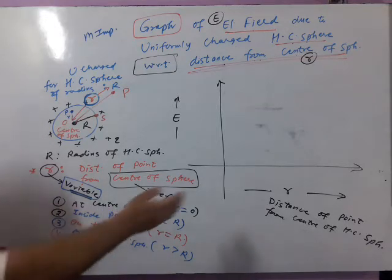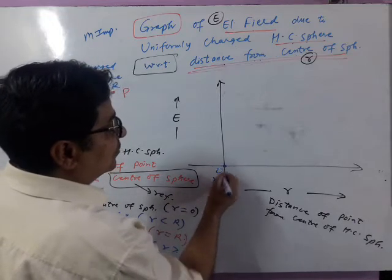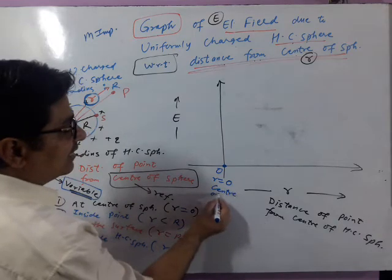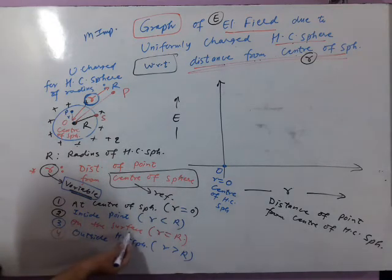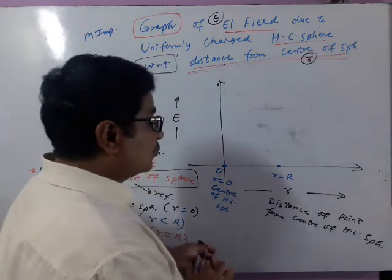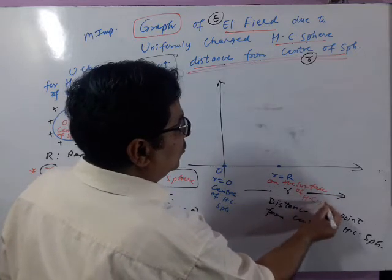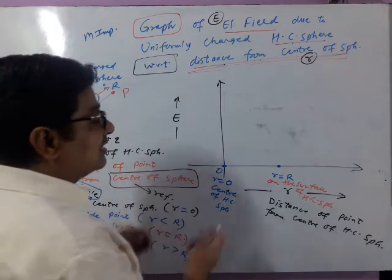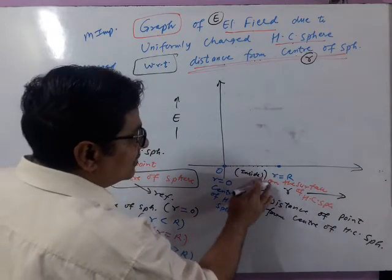Now apply these four points to the graph. At the origin, small r is 0 — this corresponds to the center of the hollow conducting sphere. The region where small r is less than capital R is the inside of the sphere. The point where small r equals capital R is the surface, and beyond that is the outside region where small r is greater than capital R.